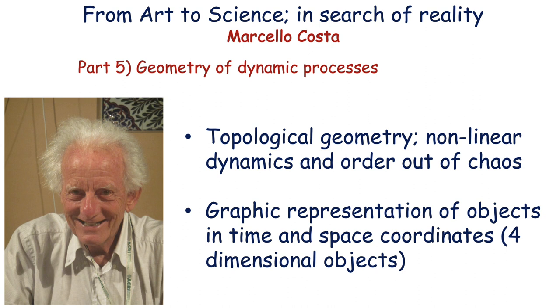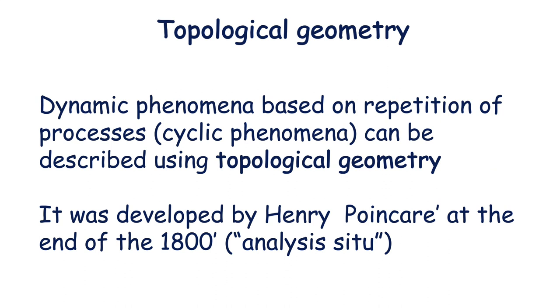Today, on part five, I'll deal with geometry of dynamic processes. What has been called the topological geometry with the non-linear dynamics and order out of chaos, and the development of graphic representation of objects in time and space. What is topological geometry? Dynamic phenomena based on repetition of processes, cyclic phenomena, can be described using what is called topological geometry, that was developed by Henry Poincaré at the end of the 1800s. He used the Latin term analysis situ, analysis of where things are.